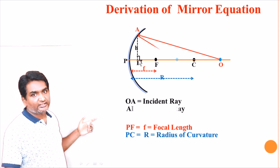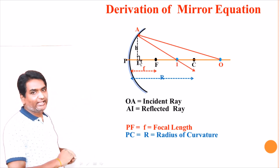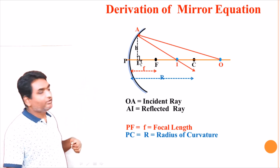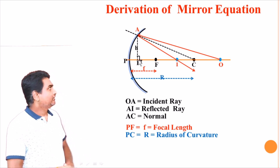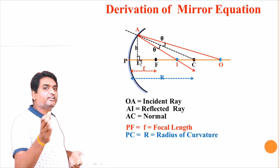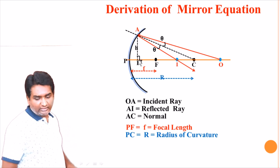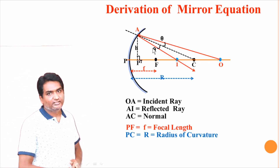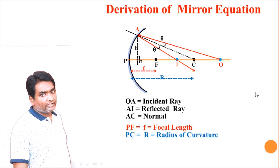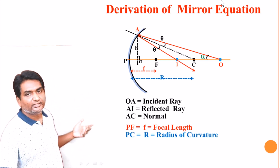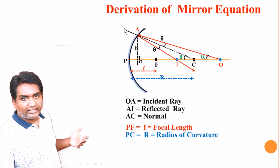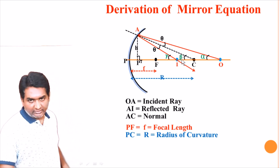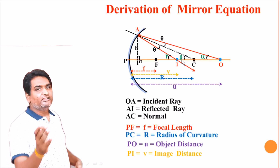At the point of incidence A, the light ray is reflected and passes through point I on the principal axis — we call this ray A-I as the reflected ray. Let us draw the normal from the point of incidence A which passes through the center of curvature C. The angle made by the incident ray with the normal is called the angle of incidence — theta is the angle of incidence, which also equals the angle of reflection. Let alpha be the angle the incident ray makes with the principal axis, beta be the angle the normal makes with the principal axis, and gamma be the angle the reflected ray makes with the principal axis. Let U be the object distance and V be the image distance.